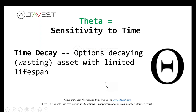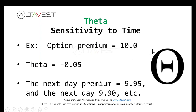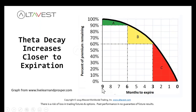And theta decay: options have limited lifespan, so theta is a negative number — it equals one day of time decay. For example, if the premium is 10 points and theta is negative 0.05, the next day the premium would slip to 9.95, and after that, 9.90, just based on theta decay. As you approach time zero, the value of that option really starts to drop, especially in the last couple of months or even a few days.